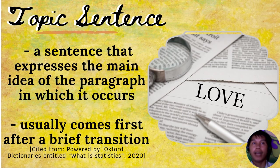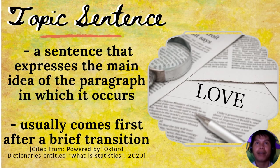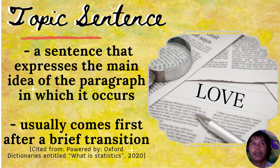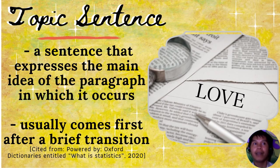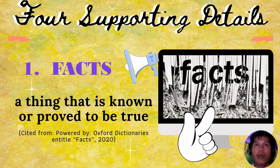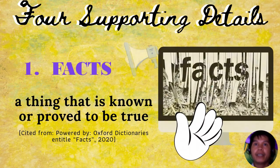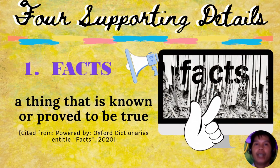Another component every basic paragraph should contain is a clearly stated topic sentence at the beginning of the paragraph. The purpose of the topic sentence is to indicate what controlling idea the paragraph is going to explore — a sentence that expresses the main idea of the paragraph, usually coming first after a brief transition. Once you state the controlling idea in the topic sentence, your next order of business should be providing adequate support for that idea or argument.